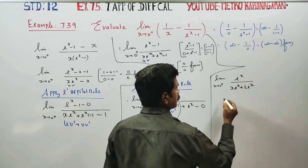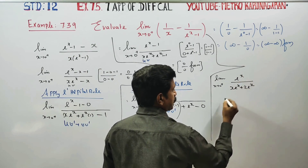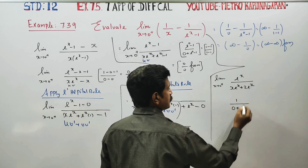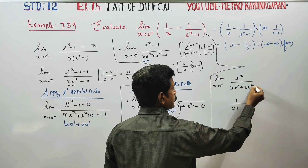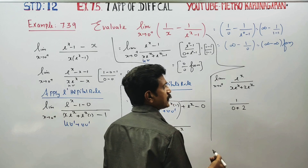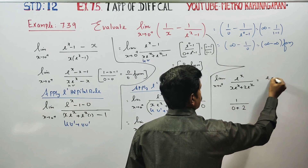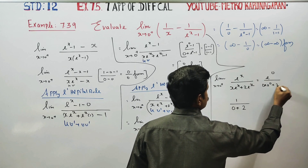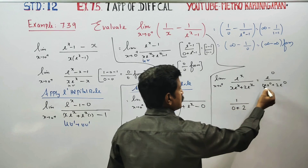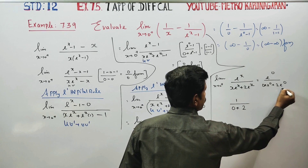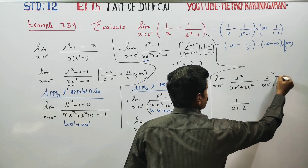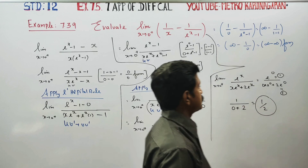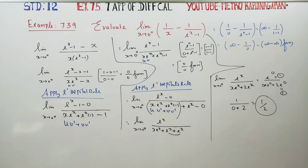Now apply x equals 0: e power 0 is 1 in the numerator. In the denominator, 0 into e power 0 is 0, and 2 into e power 0 is 2. So the answer is e power 0 divided by (0 plus 2 into e power 0) = 1 by 2. The final answer is 1 by 2. Thank you.